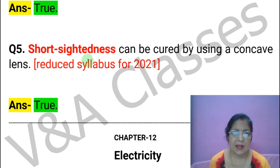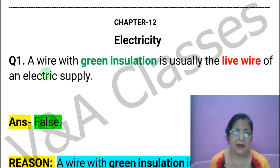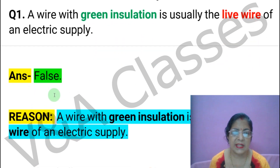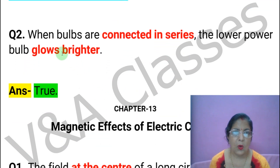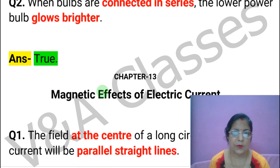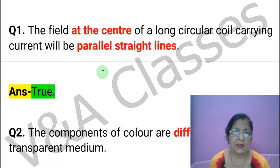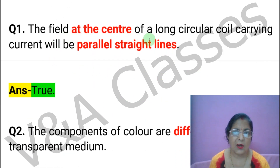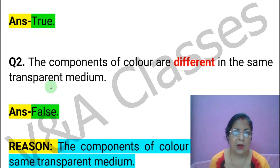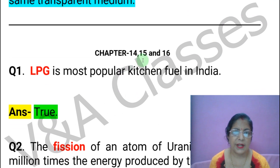Now Chapter 12: Electricity. First statement: A wire with green insulation is the live wire of the electric supply. This statement is FALSE. Next statement: When bulbs are connected in series, the lower power bulb glows brighter. This statement is TRUE. Now Chapter 13: Magnetic Effect of Electric Current. First statement: The field at the center of a long circular coil carrying current will be parallel straight lines. This statement is TRUE. Next statement: The components of color are different in the same transparent medium. This statement is FALSE.